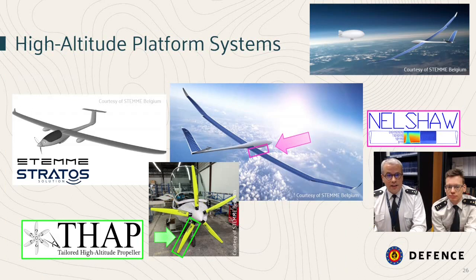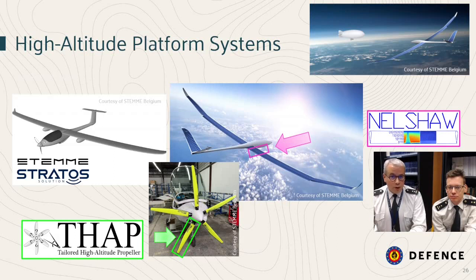Two projects focus on high altitude platform systems in close collaboration with industry in Belgium. High altitude platform systems are aircraft typically flying above 16 km altitude in our stratosphere. They generally remain there for longer than seven days in a row, so this is very demanding aerodynamics because the air is thin and the need for efficiency is extremely high. Such platforms can be used as ISR platforms or communications hubs, so they have a lot of military relevance and can be more easily maneuvered and changed than satellites.